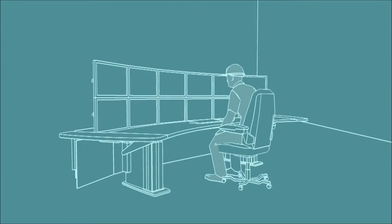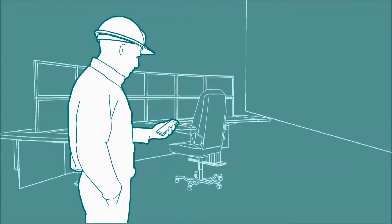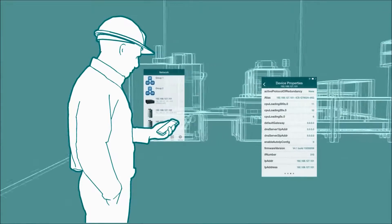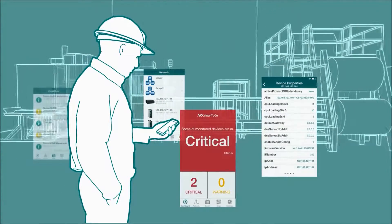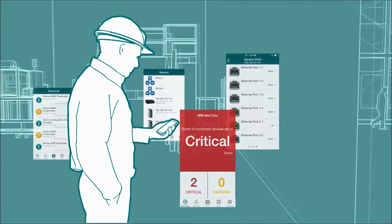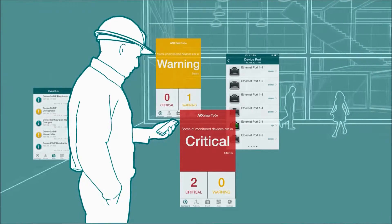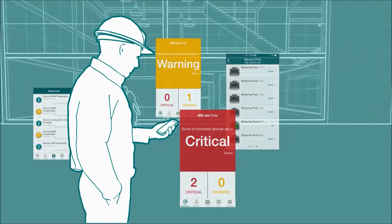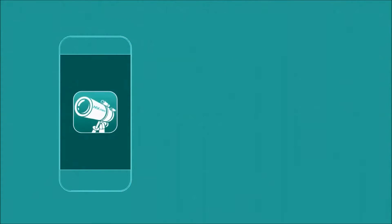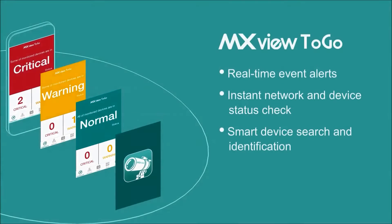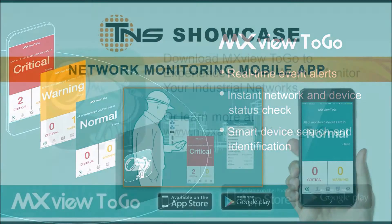MXView and MXView2Go together give you complete visibility of your network status. From the control room, you see the complete network topology and load status. And when you're out and about, you will receive push notifications of errors on your phone and get real-time network and device status. Get real-time push event notification, instant network device and status checks, and smart search and ID.